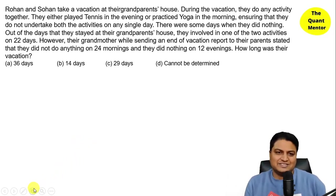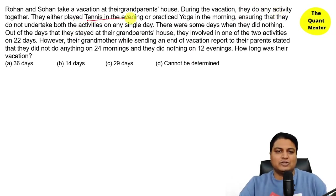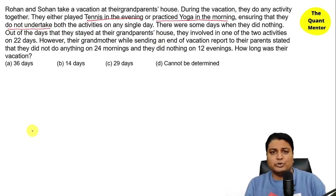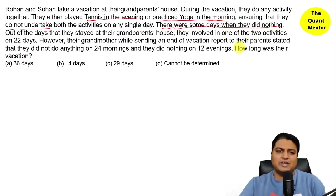The question says: Rohan and Sohan take a vacation at their grandparents' house. During the vacation, they do activities together — they either play tennis in the evening or practice yoga in the morning, ensuring that they do not undertake both activities on any single day. There were some days when they did nothing at all.